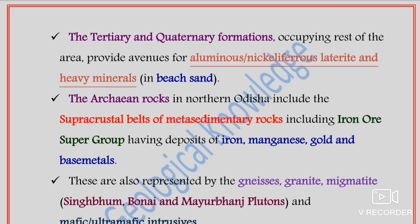The Archaean rocks in northern Odisha include the supracrustal belts of metasedimentary rocks, which include the iron ore super group. This is very important — the Archaean rocks in the northern fringe of Odisha include the supracrustal belt of metasedimentary rocks with deposits of iron, manganese, gold, and base metals, as discussed in previous lectures.